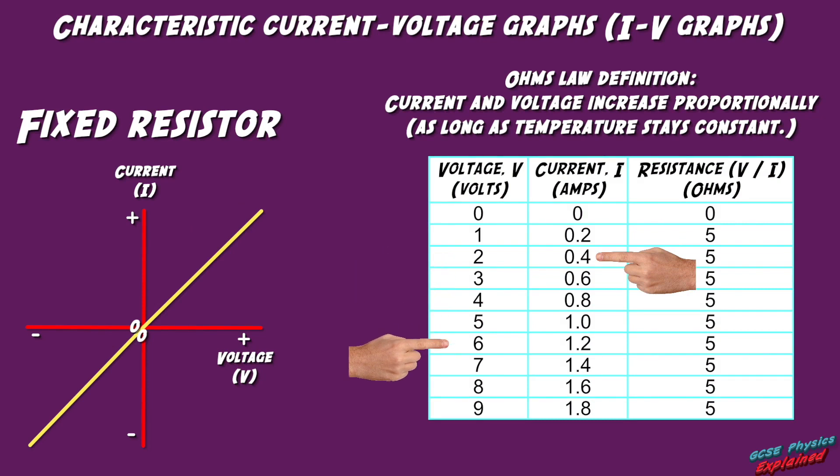And if the voltage trebles from say 2V to 6V, the corresponding current also trebles, going from 0.4A to 1.2A in this example.